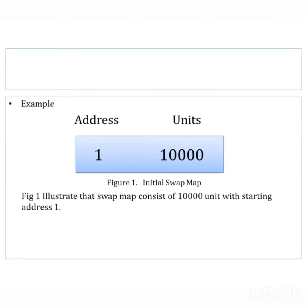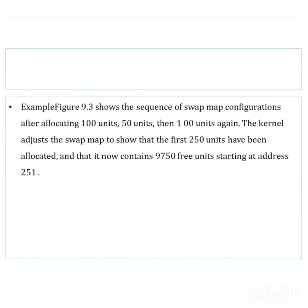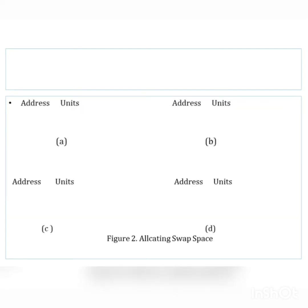Let's take an example of how the swap map looks. The map has two fields: an address field and a unit field. The address field indicates the starting address, and the unit field shows the total number of available units. In this example the starting address is 1 and the total units available are 10,000. We have three processes: process one needs 100 units, process two needs 50, and process three needs 100 units.